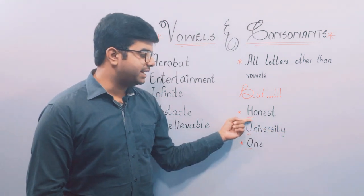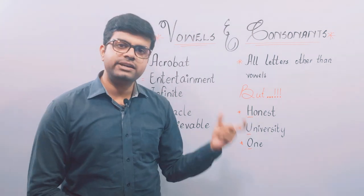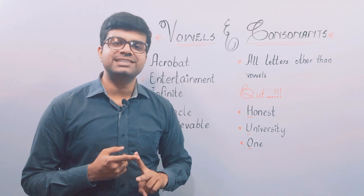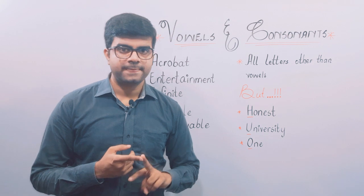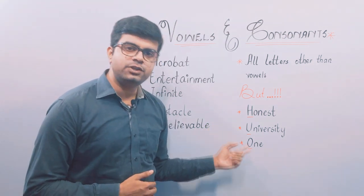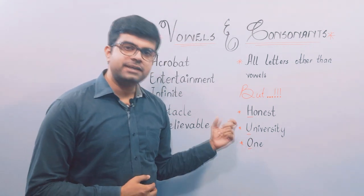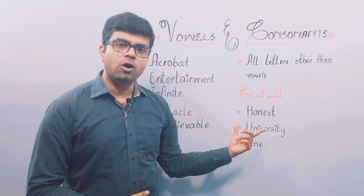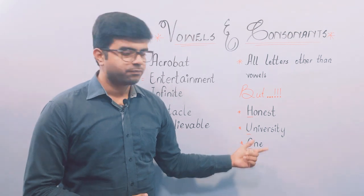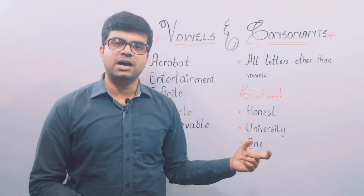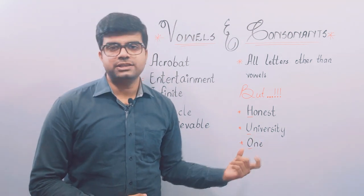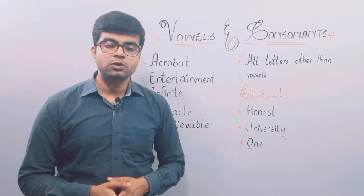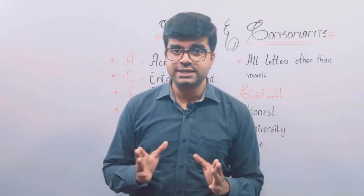So 'honest' starts with a consonant but we consider it a vowel sound when using articles. When we use the indefinite articles A and AN, we always decide based on the sound — vowel sound takes AN and consonant sound takes A. For example, 'university' starts with the vowel U, but it makes a consonant sound, so we say 'a university'. Similarly, 'one' starts with a vowel but has a consonant sound, so we say 'a one-roomed house'.